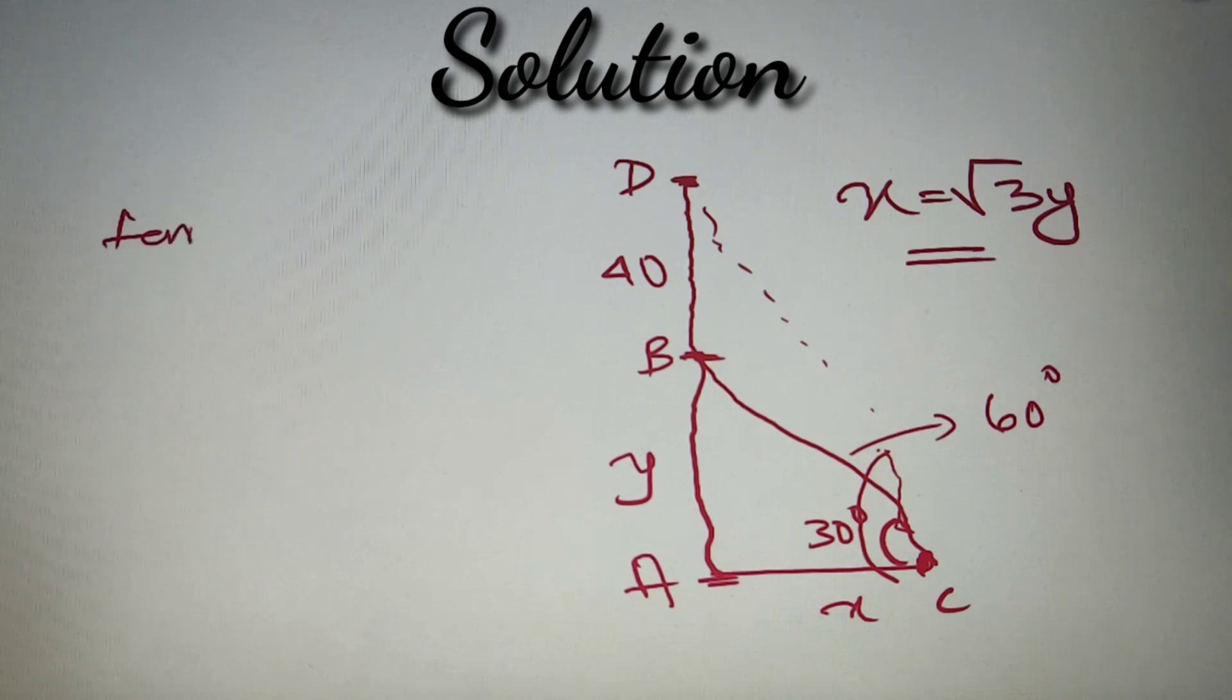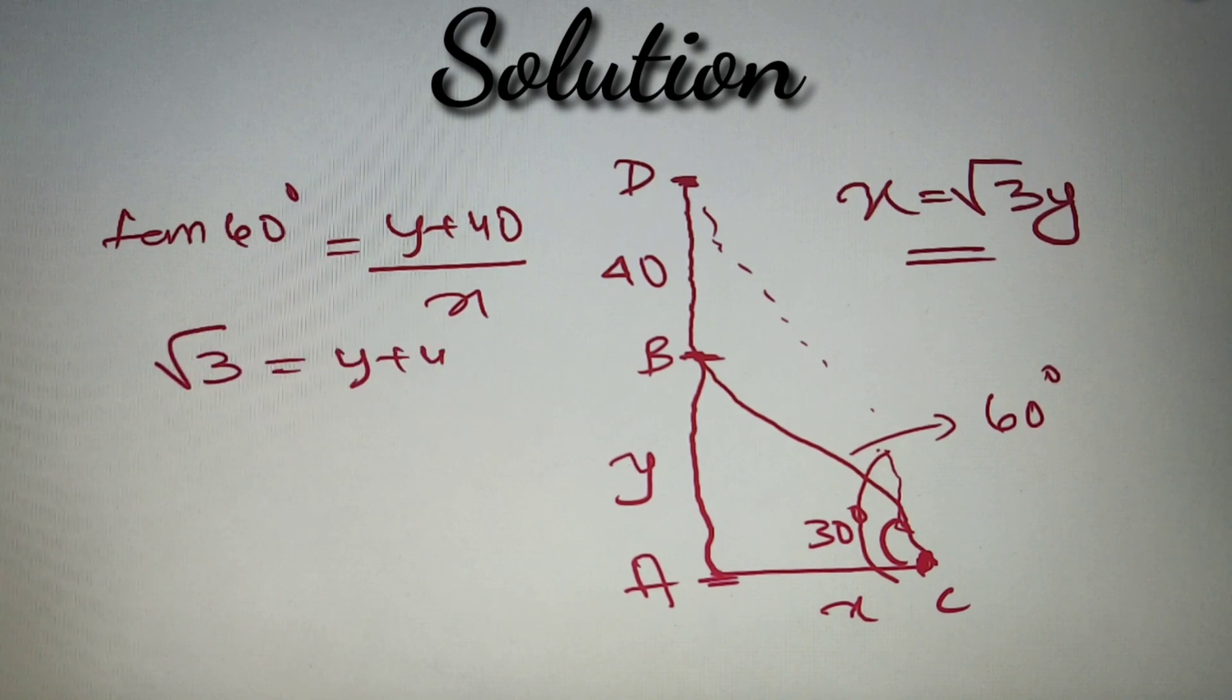we apply the same rule that is tan 60 degrees is equal to AD by AC. Now instead of AD, we can write y plus 40 and AC is considered as x. Now we know that the value of tan 60 is equal to root 3. So we have got root 3 is equal to y plus 40 divided by x. And instead of x, we can write root 3y. We have got root 3 is equal to y plus 40, whole divided by root 3y.